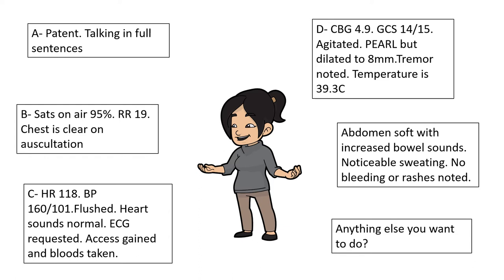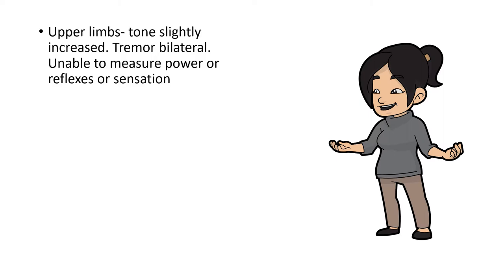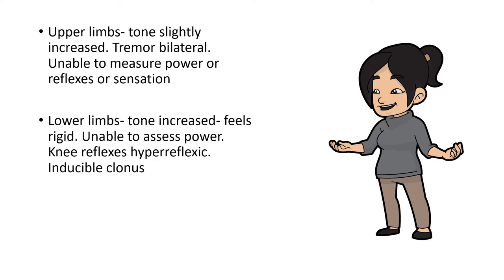Is there anything else you'd want to do at this point? I would personally do a neurological examination because of that tremor and new agitation. On upper limb assessment, you notice slightly increased tone when moving her arms and the tremor is fairly prominent. Due to the agitation, it's difficult to assess power, reflexes, or sensation fully. On lower limbs, the tone is very much increased — feels almost rigid.